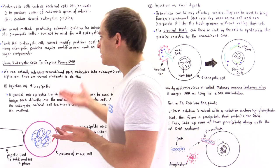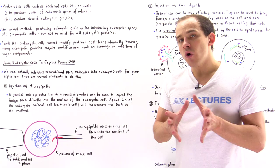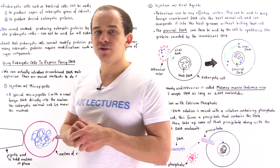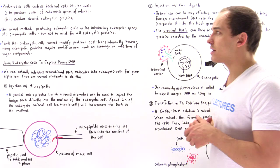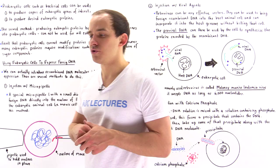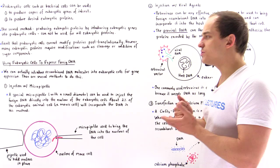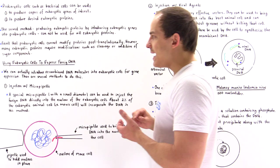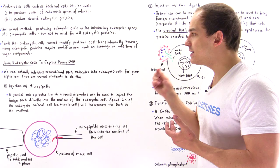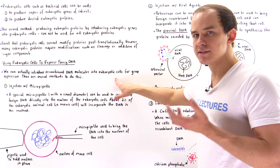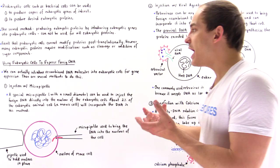That leads us directly to the next question: can we actually introduce foreign eukaryotic genes into other eukaryotic cells? So instead of using prokaryotic cells to produce a desired eukaryotic protein, can we use eukaryotic cells — for example, animal cells — to produce copies of proteins and use those proteins for a variety of different purposes? It turns out we can actually introduce recombinant DNA molecules into certain eukaryotic cells, such as mouse cells.